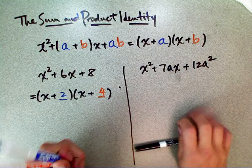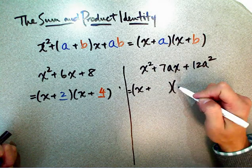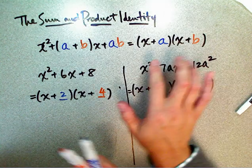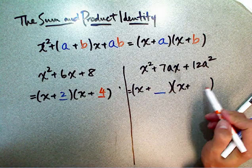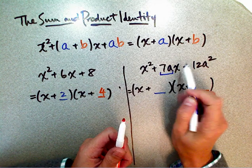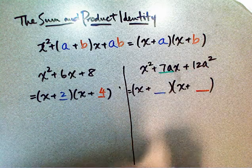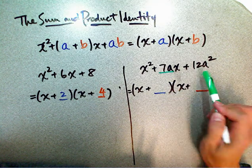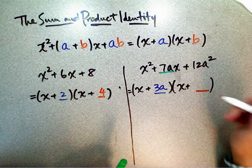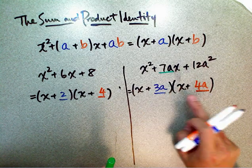How about this one? We should be able to factor this as x plus some number times x plus another number. If we add the two numbers we should get the coefficient of x, and if we multiply them we should get 12a squared. Those two numbers are 3a and 4a, because 3a plus 4a is 7a, and 3a times 4a is 12a squared.